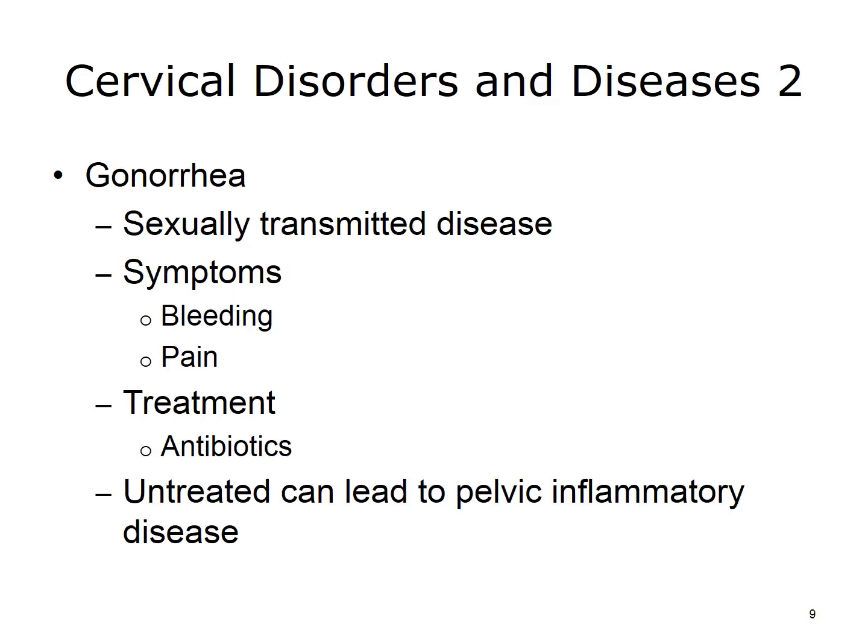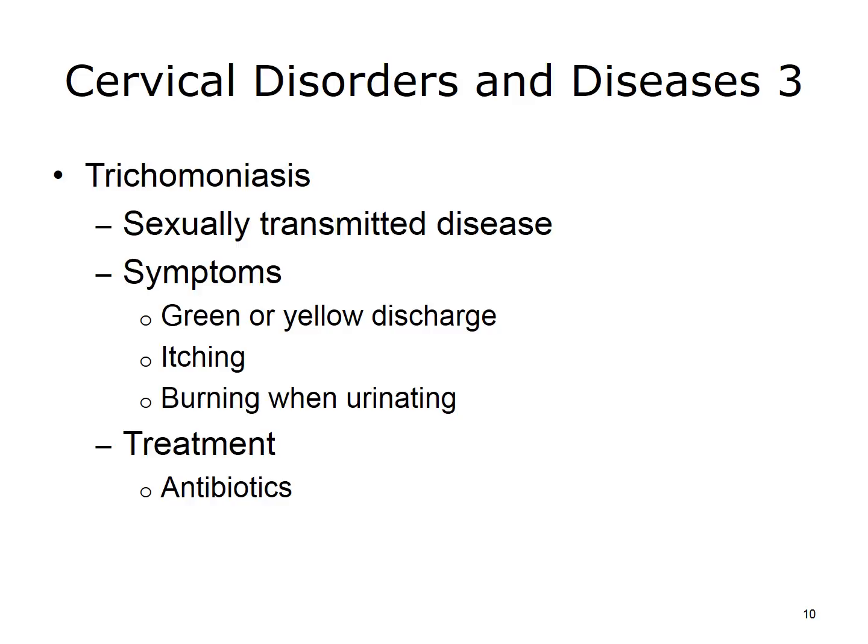Gonorrhea is a curable STD. The bacteria that causes gonorrhea can infect the genital tract, mouth, or anus. Symptoms in females include bleeding between menstrual cycles, pain when urinating, and increased discharge from the vagina. Untreated, it can lead to pelvic inflammatory disease, or PID, which can lead to infertility. Treatment includes antibiotics. Trichomoniasis is a sexually transmitted disease caused by a parasite. Symptoms include a green or yellow discharge from the vagina, itching in or near the vagina, and discomfort with urination. This disease is also treated with antibiotics.